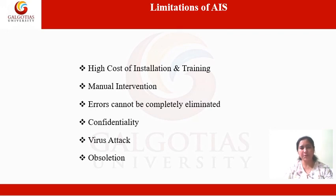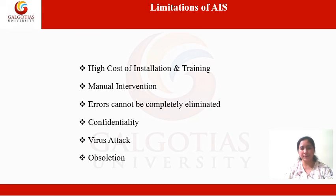Another major limitation of accounting information system is virus attacks. Any data stored in information systems can be infected with a virus that may lead to disruption or modification of financial information stored in AIS. Another major limitation is obsolescence. In the era of digitization, technology is changing at a swift pace, and it takes very little time for technology to become obsolete. This generates a need for organizations to adopt changes at the earliest, otherwise it may lead to error-prone data.